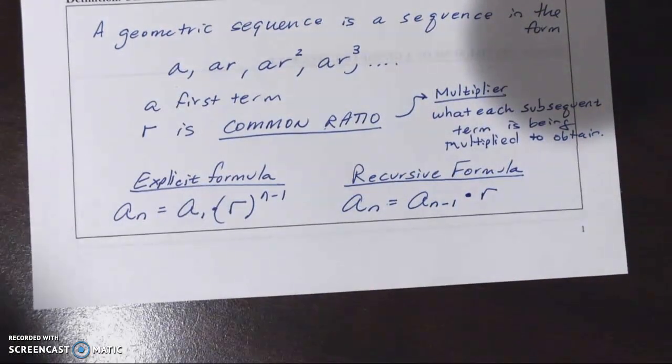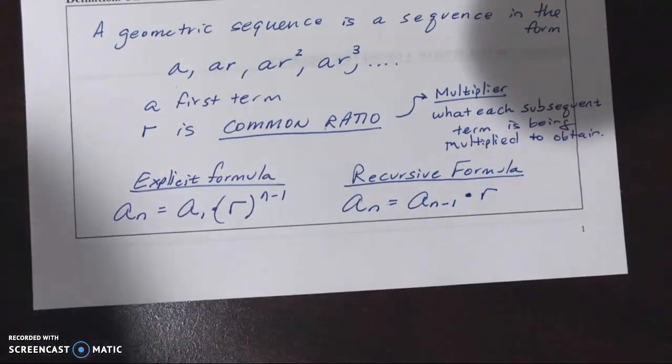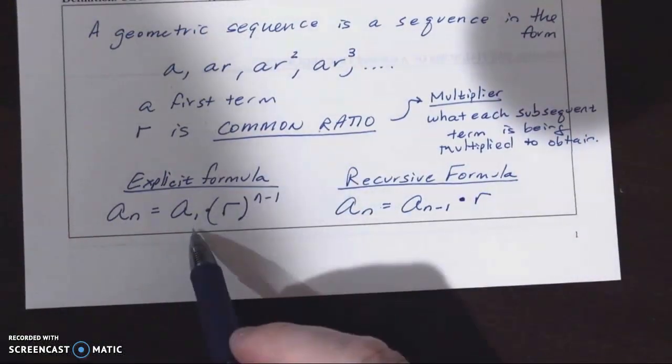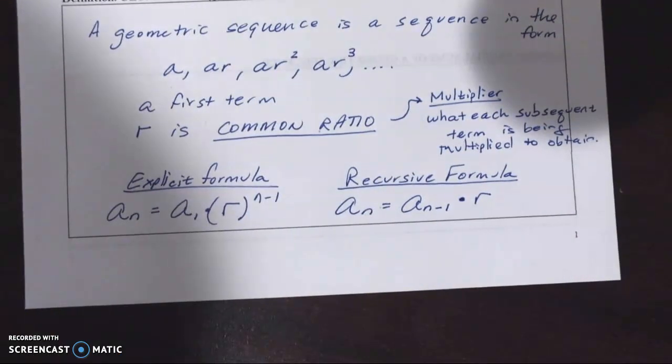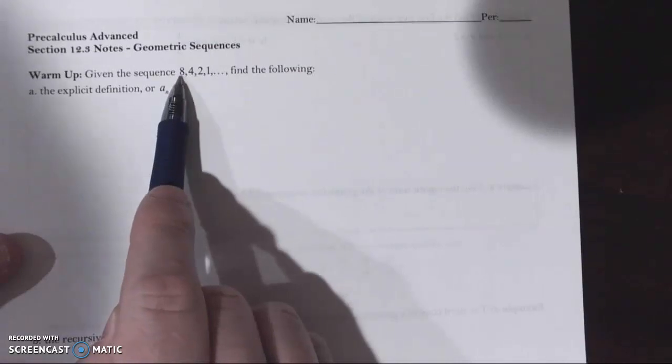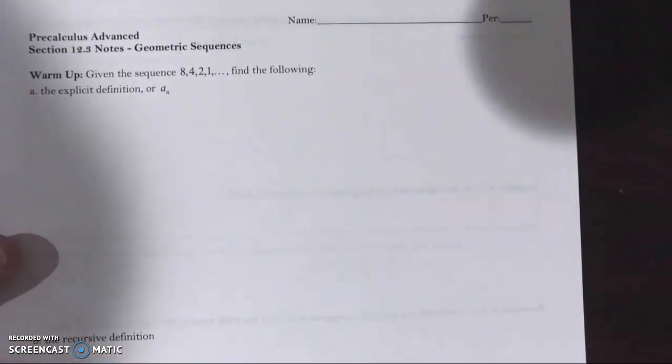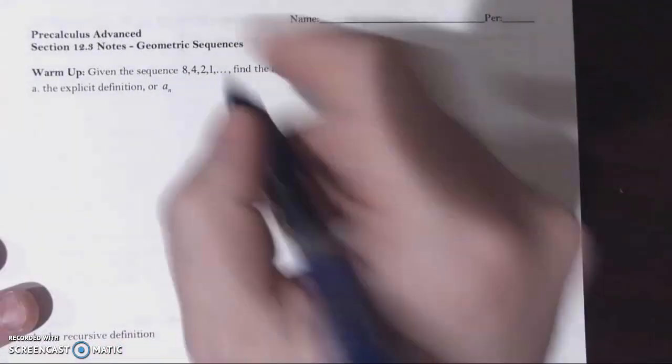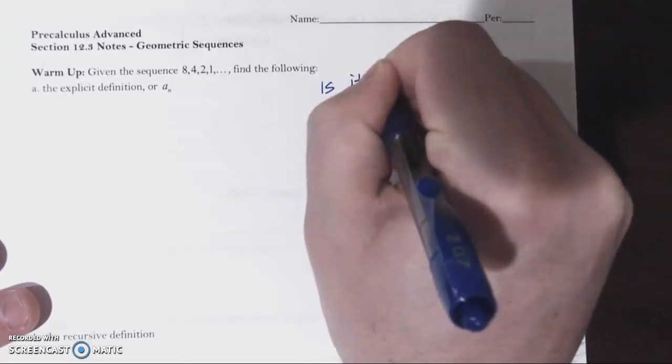Let's go up here, and basically the things we're going to be needing to identify is the common ratio, the first term, things like that. Let's go back up to our warmup and use it as a little bit of an example. Given the sequence eight, four, two, one, find the following. The explicit definition, well, is it geometric?